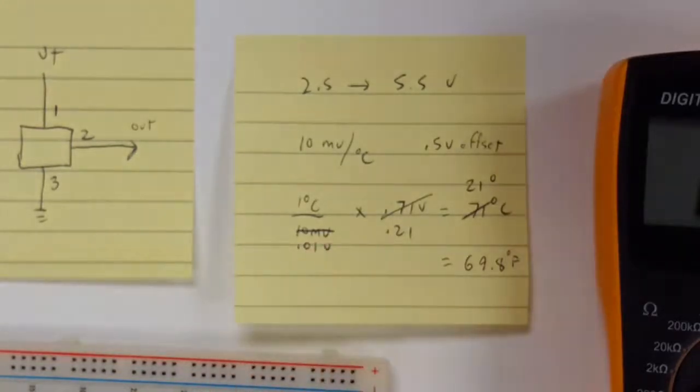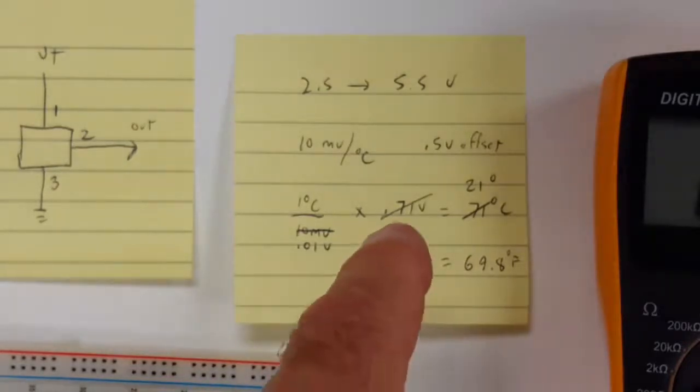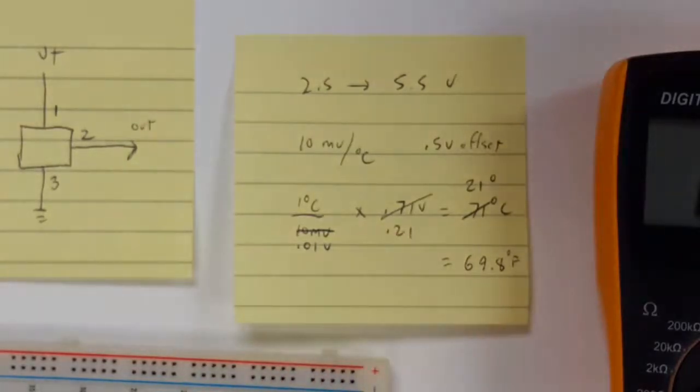If you multiply that by 0.21, and that's after you subtract off 0.5 volts from 0.71, because that's what I'm measuring right here, then that gives you a 21 degree centigrade temperature for the room.